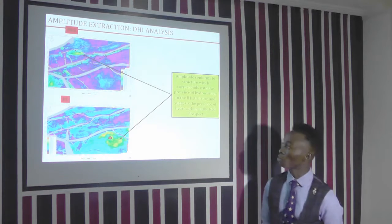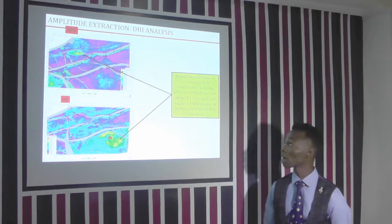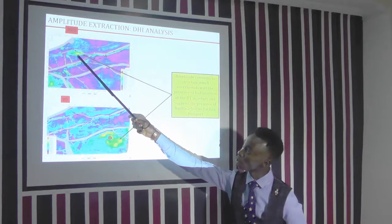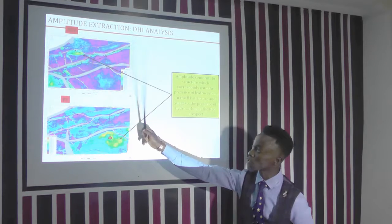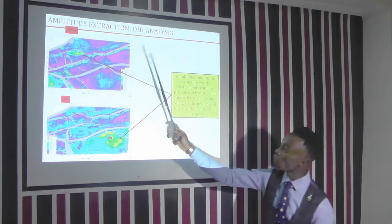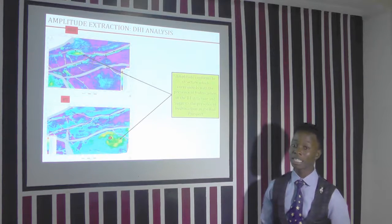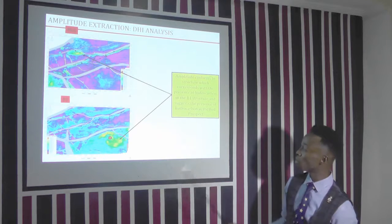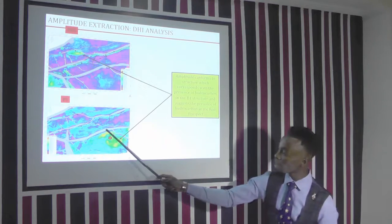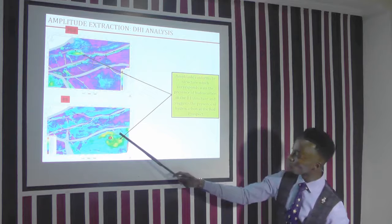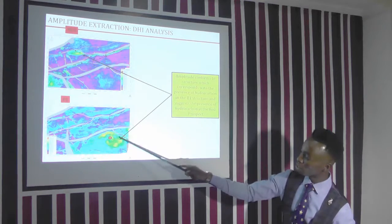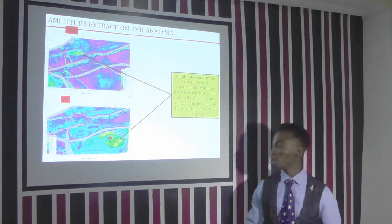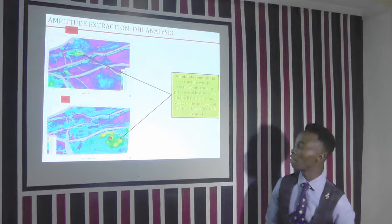Our amplitude extraction, which is also a direct hydrocarbon indicator, was mapped. This shows our B1 structure and A5X structure. On the B1 structure, the amplitude conforms to the structure, which indicates the presence of hydrocarbon in that area. In our B1 structure, we were also able to identify a conformable amplitude to the structure where no well has been drilled, and we identified that as a potential prospect in the field.